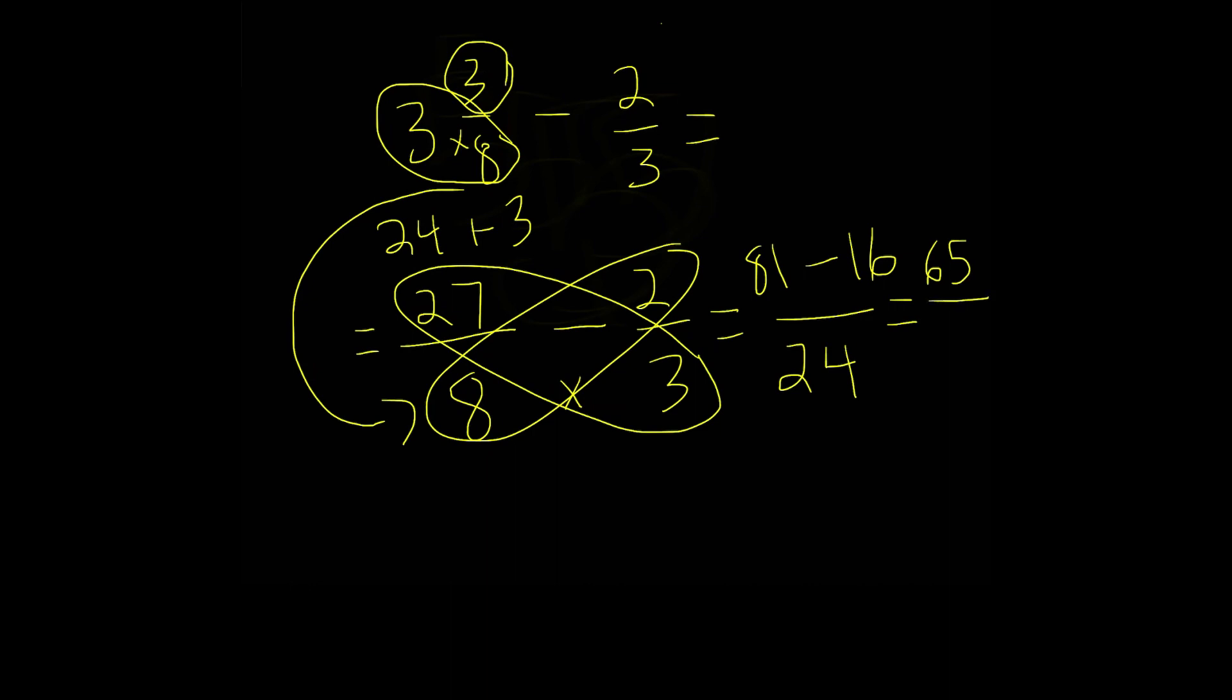65 over 24. And this is our answer in improper fraction form. But we can actually convert this into a mixed number.